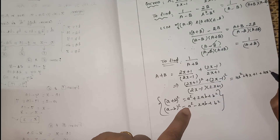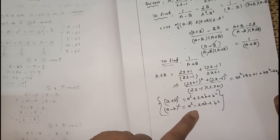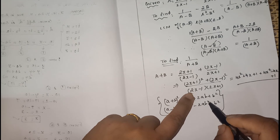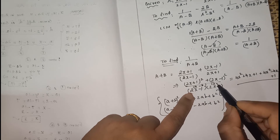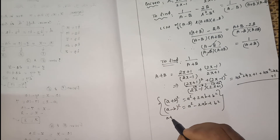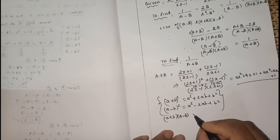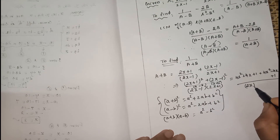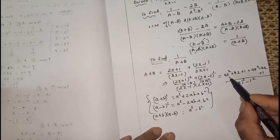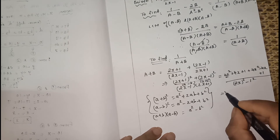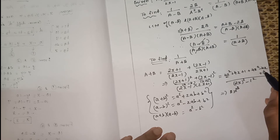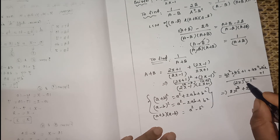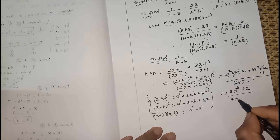For the denominator, (2x-1)(2x+1) is in the form (A-B)(A+B) = A²-B², so it becomes (2x)²-1² = 4x²-1. Now adding the numerator: 4x²+4x+1 plus 4x²-4x+1. So 4x²+4x² = 8x², the 4x and -4x cancel, and 1+1 = 2. So the numerator is 8x²+2, giving A+B = (8x²+2)/(4x²-1).